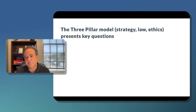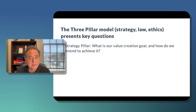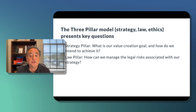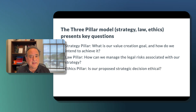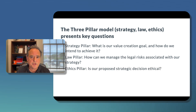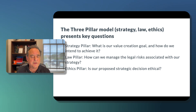The three-pillar model — strategy, law, and ethics — presents some key questions. Starting with the strategy pillar: what is our value creation goal, and how do we intend to achieve it? We then turn to the law pillar: how can we manage the legal risks associated with our strategy? And finally, the ethics pillar: is our proposed strategic decision ethical? In a separate video, I'll provide an example of an ethical dilemma and how we would resolve it using the three-pillar method.